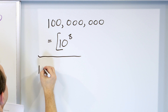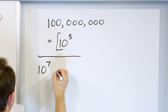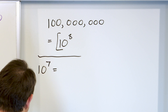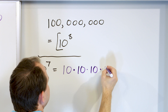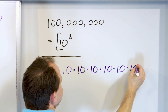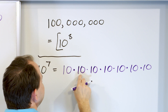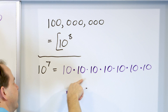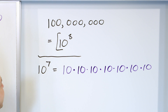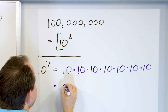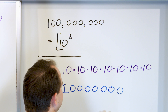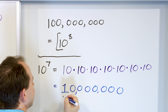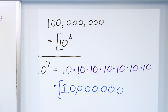Let's take ten to the power of seven and write it as a full number. It's ten times ten times ten — three of them, then four, five, six, and seven. We have seven tens on the board all multiplied together. So it's a number one followed by seven zeros: one, two, three, four, five, six, seven. Put a comma after every three digits, and the answer is ten million.